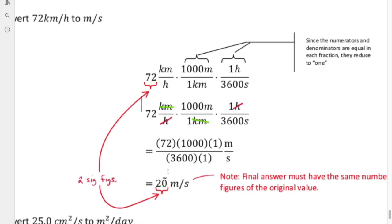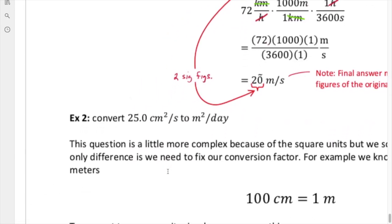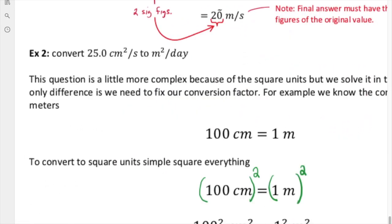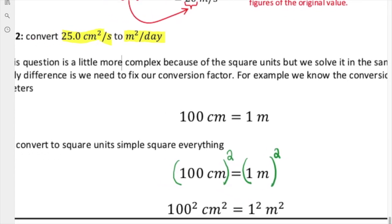That's a fairly straightforward technique, but things get a little bit more complex when we have to do square units. The next one is we want to do 25 centimeters squared per second to meters squared per day. It looks a little bit more complex, but it's not that difficult to do. The problem is we know the relationship between centimeters and meters, but we don't know the actual relationship between centimeters squared and meters squared. They're actually slightly different, and here's how we address that issue.